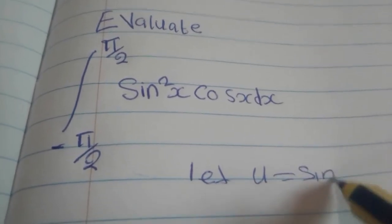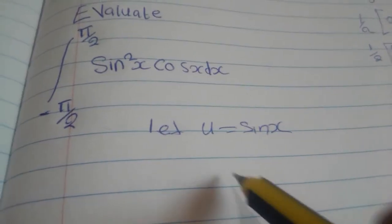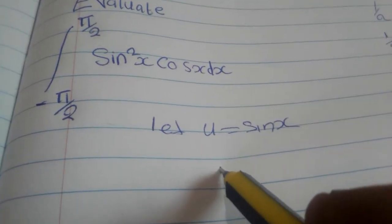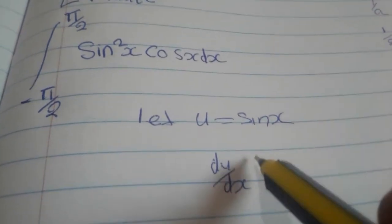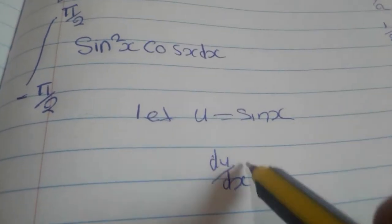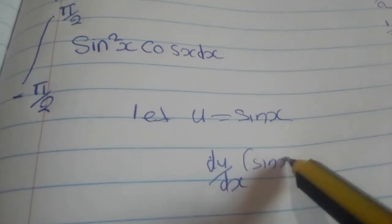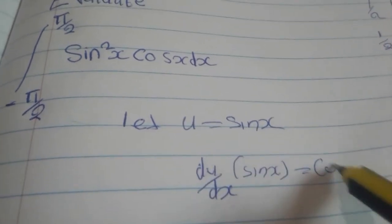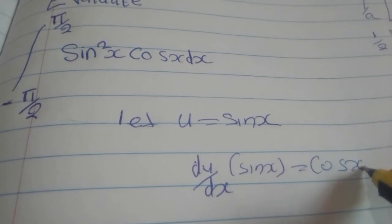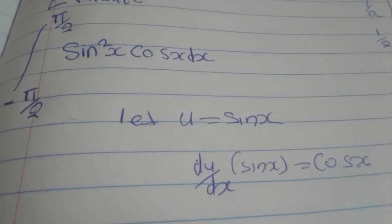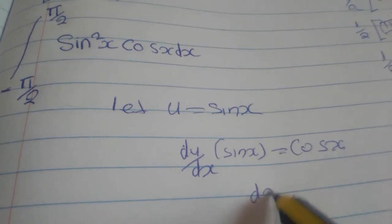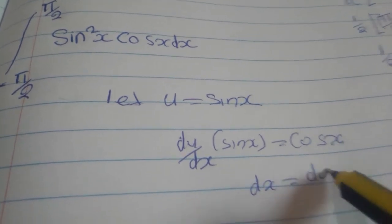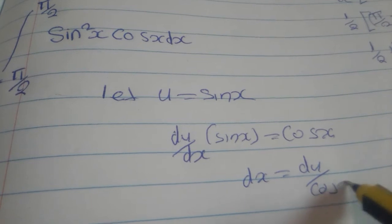Let u equal sin x. So you are going to say du over dx for sin x, you are going to get cos x. So that means dx equals du over cos x.